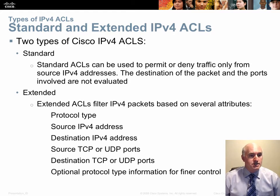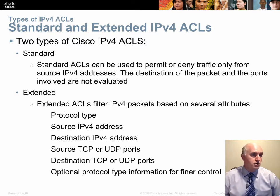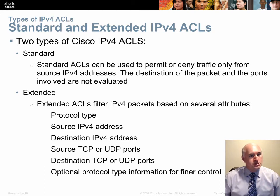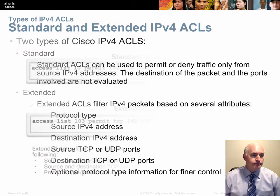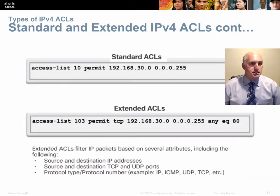An extended ACL is much more capable. You can configure it to look at just the source like a standard ACL, just the destination, or both. You can specify source protocol, destination port number, source port number, and other optional protocol types such as IP, TCP, or UDP — providing very fine-tuned filtering capability.